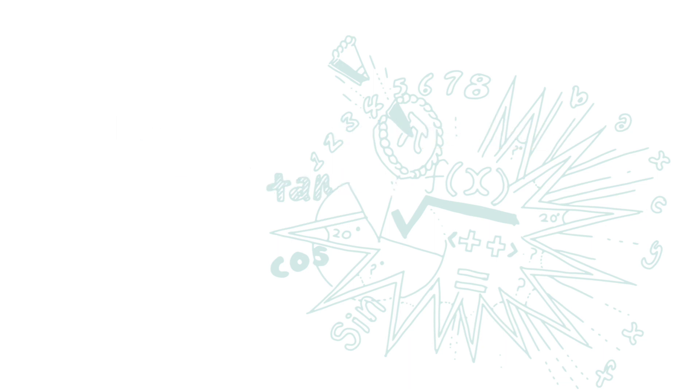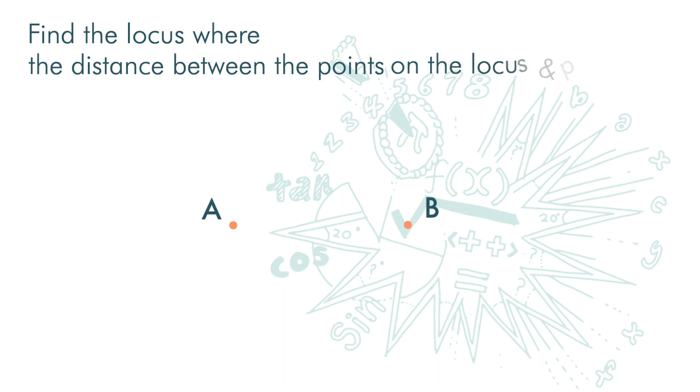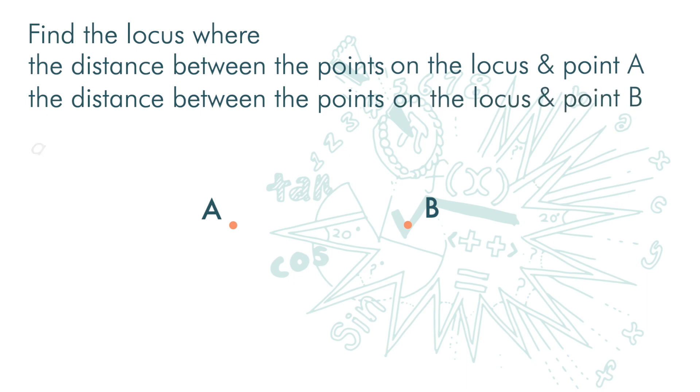Here, we have point A and B. And we want to find the locus where the distance between the points on the locus and point A and the distance between the points on the locus and point B are the same.